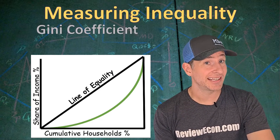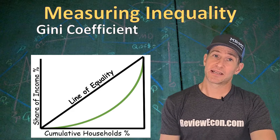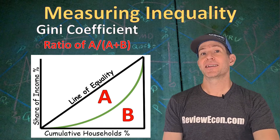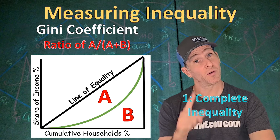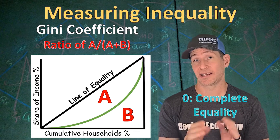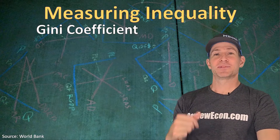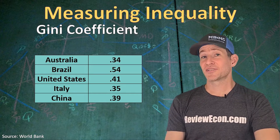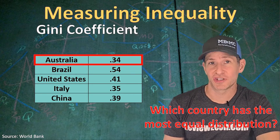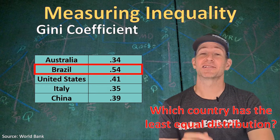The Lorenz curve can be used to calculate a Gini coefficient, which is another way of measuring income inequality. The Gini coefficient is the ratio of area A divided by area A plus B. If that number equals one, that is a country with complete inequality where one person owns all of the income. If the coefficient equals zero, that is complete equality where every bit of income is evenly distributed. Every economy in the world falls between those two extremes. Looking at 2018 Gini coefficients: Australia has the most equal distribution of income with the lowest Gini coefficient, while Brazil has the least equal distribution with the highest Gini coefficient.